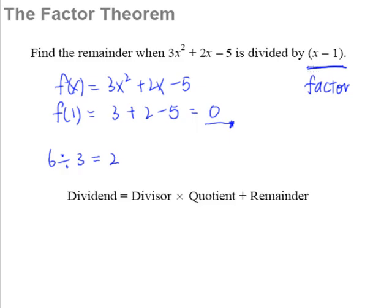So what the remainder theorem tells us is that whenever we have a dividend, it can be written as the divisor multiplied by its quotient plus its remainder. So when this remainder is 0, that means to say there is no remainder at all.